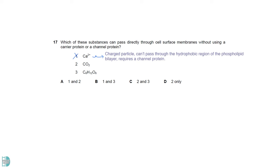Calcium ion is a charged particle. So it cannot pass through the hydrophobic region of the phospholipid bilayer and requires a channel protein. Glucose is water-soluble and large. It requires a carrier protein to pass through. Carbon dioxide is the only one that can cross by simple diffusion.